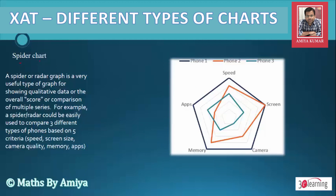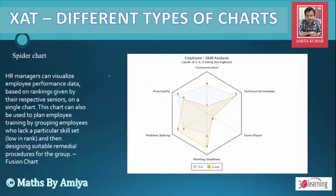Next is the Spider or Web chart — this is an easy one. It is essentially a score comparison chart. We have taken an example from a fusion chart. An HR manager can visualize implied performance data based on rankings given by their respective seniors on a single chart — this is a 360-degree performance chart. It can also be used to plan implied training.